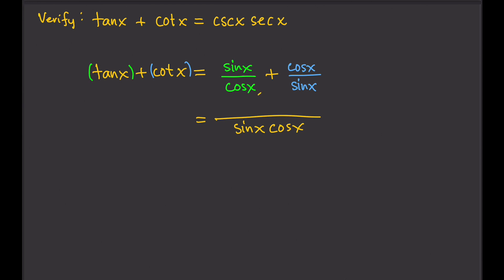Sine x cosine x divided by cosine x is sine x, and sine x times sine x gives us sine squared x. Plus, sine x cosine x divided by sine x gives us cosine x, and cosine x times cosine x is cosine squared x. This is a Pythagorean identity — we know that sine squared x plus cosine squared x equals one. So we write that as one over sine x cosine x.